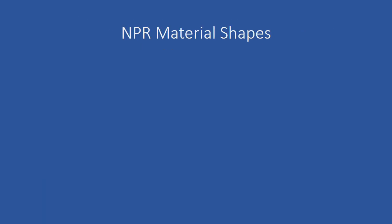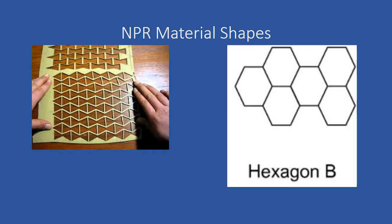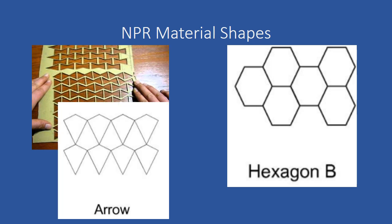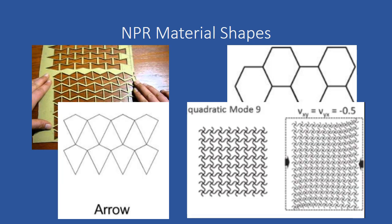There are many shapes relevant to negative Poisson ratio materials. A few of the most frequently constructed include the bow tie, the hexagon, the arrow, and other quadratic shapes.